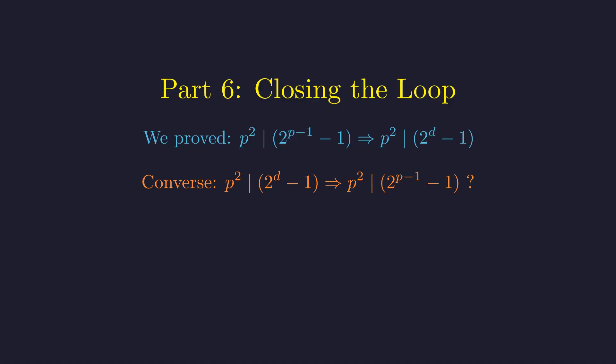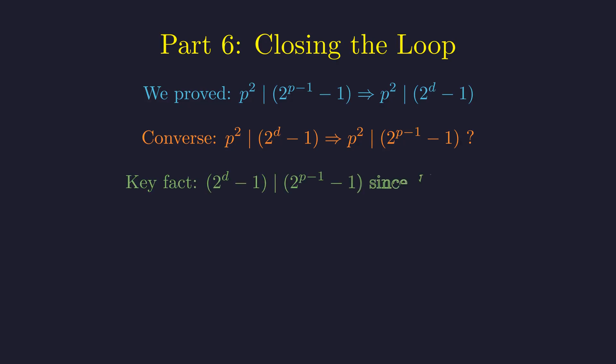But is the converse true? If p squared divides 2 to the d minus 1, does it automatically divide 2 to the power of p minus 1, minus 1? The key insight is this fundamental property. Whenever d divides p minus 1, the quantity 2 to the d minus 1 divides 2 to the power of p minus 1, minus 1.